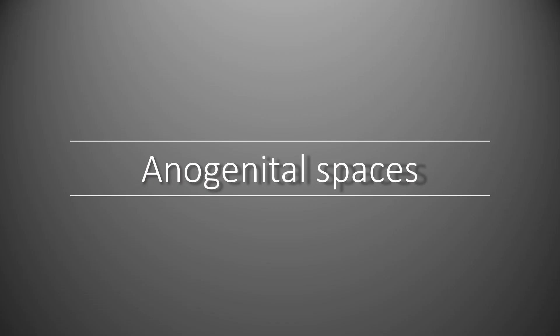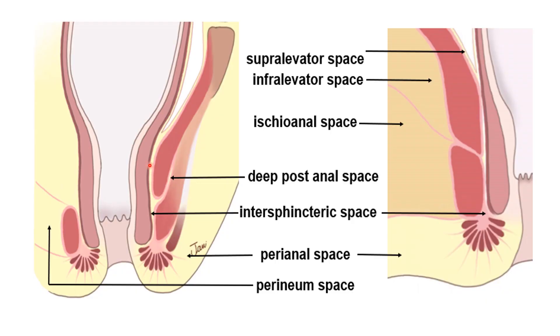There are many different anogenital spaces around the anal canal that we need to understand for surgery in anogenital sepsis. The space between the two sphincters is the intersphincteric space. The space around the perianal region is the perianal space, and anteriorly is the perineal space. The space posterior to the anal canal is the post-anal space. The space above the levator is supralevator, below the levator is infralevator, and below the ischioanal fossa fascia is the ischioanal space.